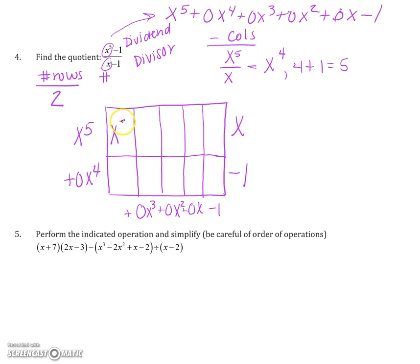So we're going to go through x to the 5th, move it into the first box. So x times what gives me x to the 5th? That would be x to the 4th. Finish out your column. x to the 4th times negative 1 is negative x to the 4th. And now you're looking at these two boxes. These add together to give you this number. So if this is negative x to the 4th and I want 0x to the 4th, this must be positive x to the 4th.